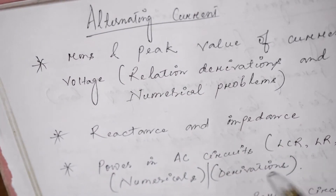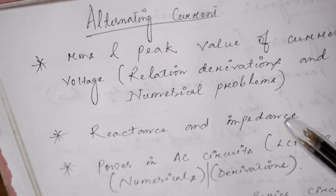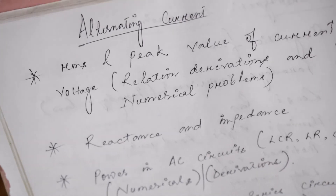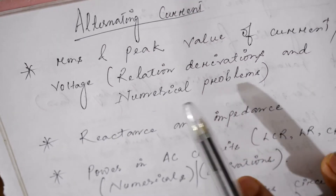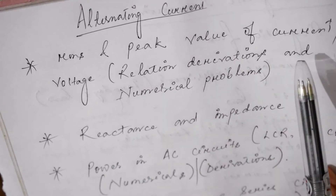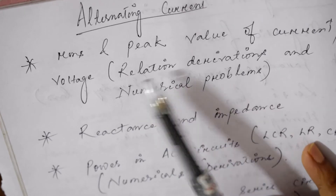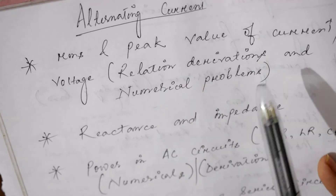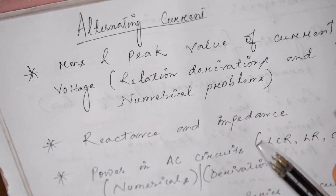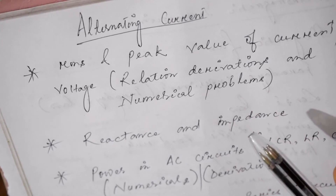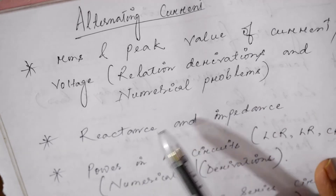Hello students, today we are going to discuss the important topics from the chapter Alternating Current. The first important topic is the relation between RMS and peak value of current or voltage — the derivation for this relation. You may also see numerical problems like finding the value of V0, V effective, IRMS, and VRMS.